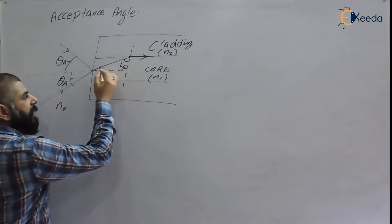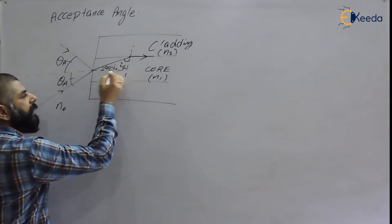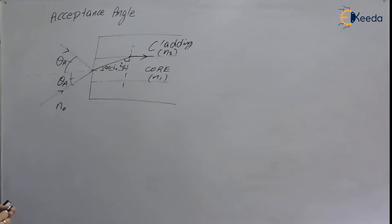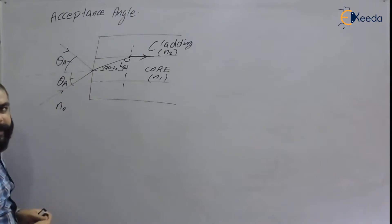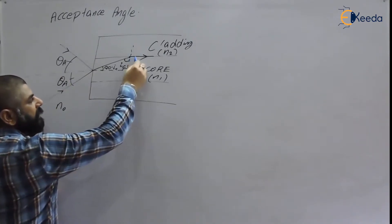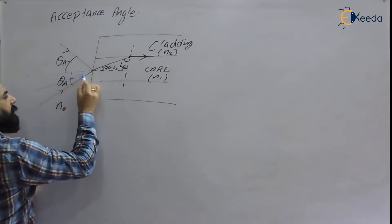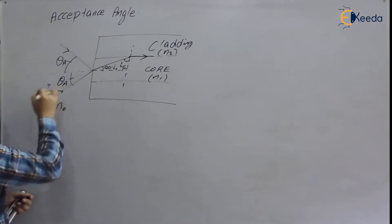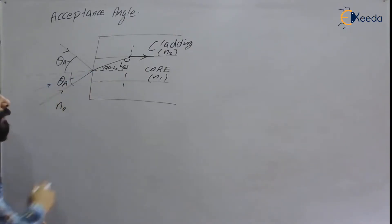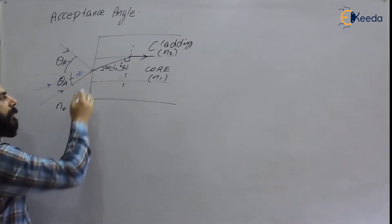This refracted angle will be 90 degrees, so the angle inside the core at the interface will be 90 minus ic, where ic is the critical angle. If the angle of incidence at the input is less than the acceptance angle, this condition ensures total internal reflection occurs at the core-cladding boundary.